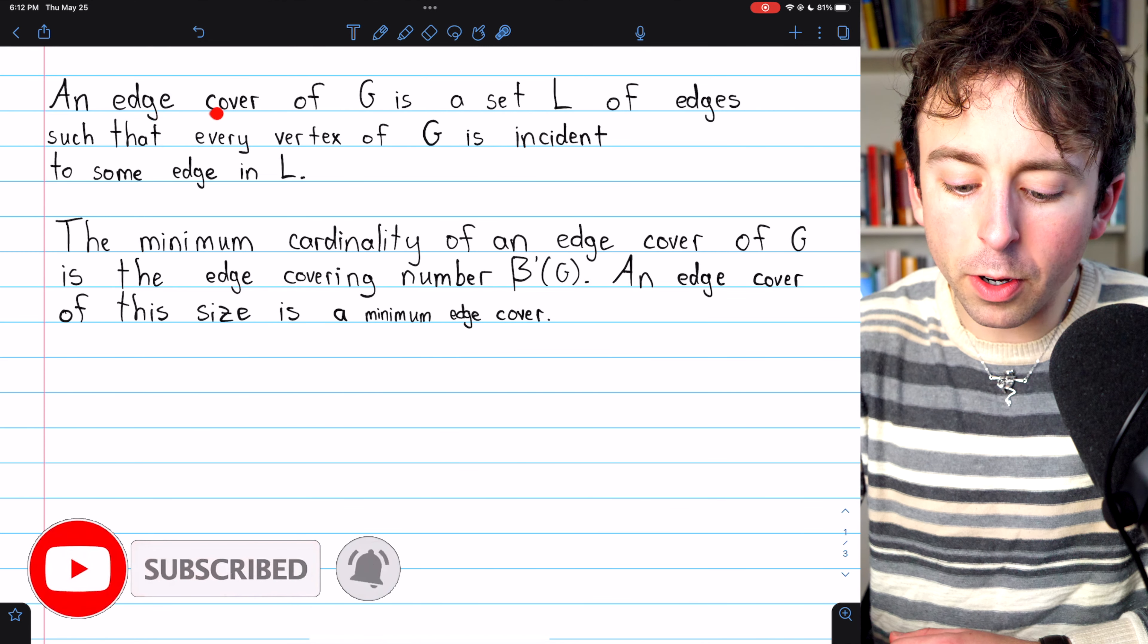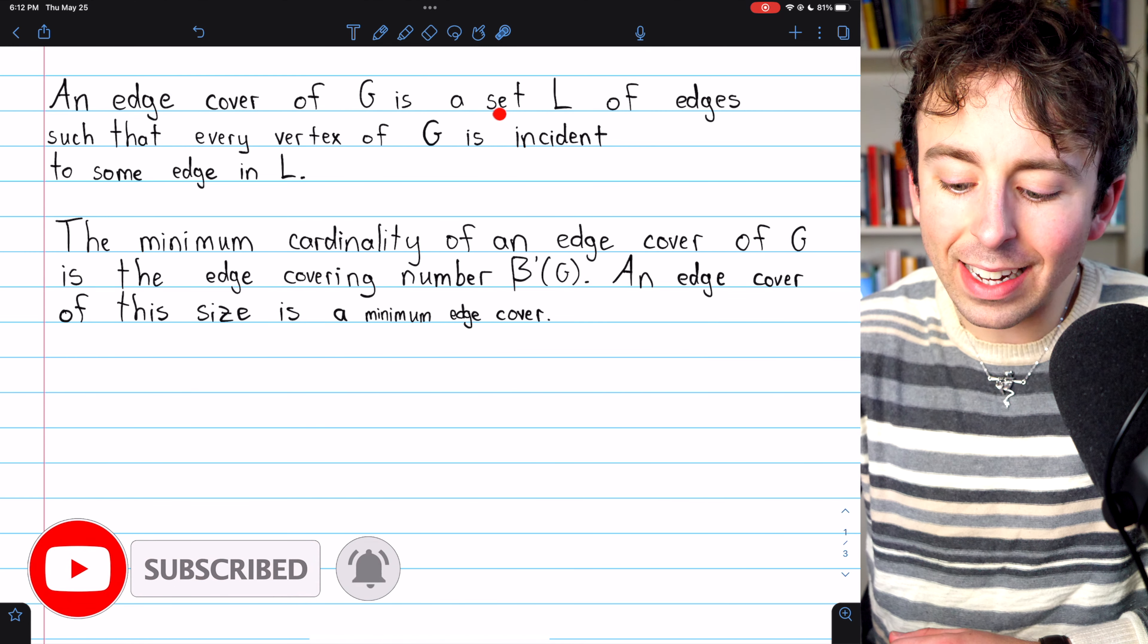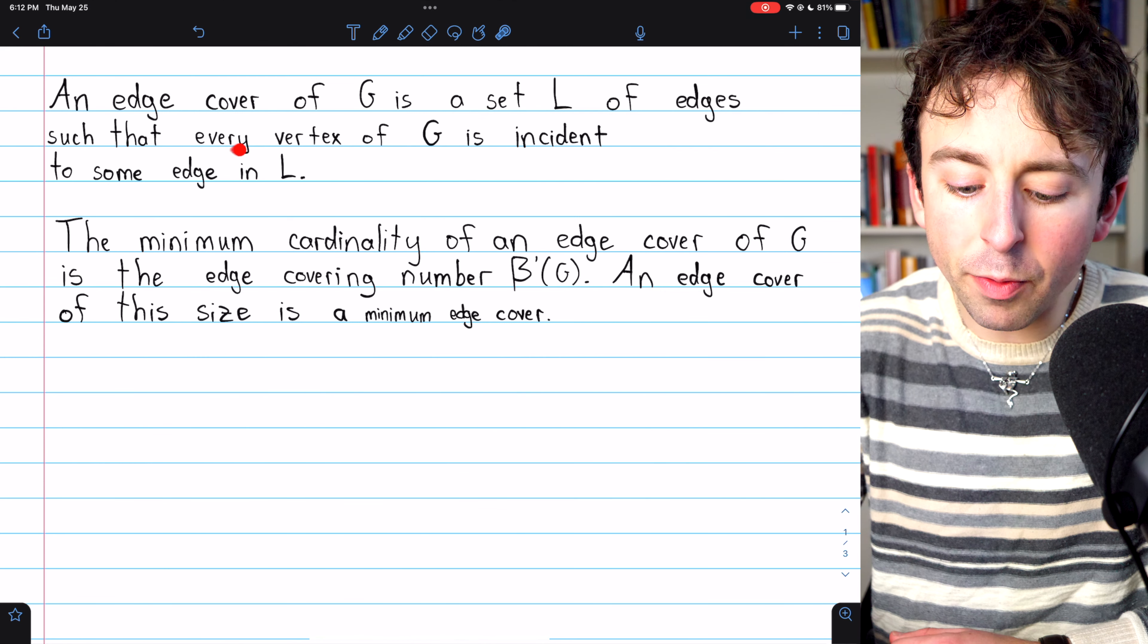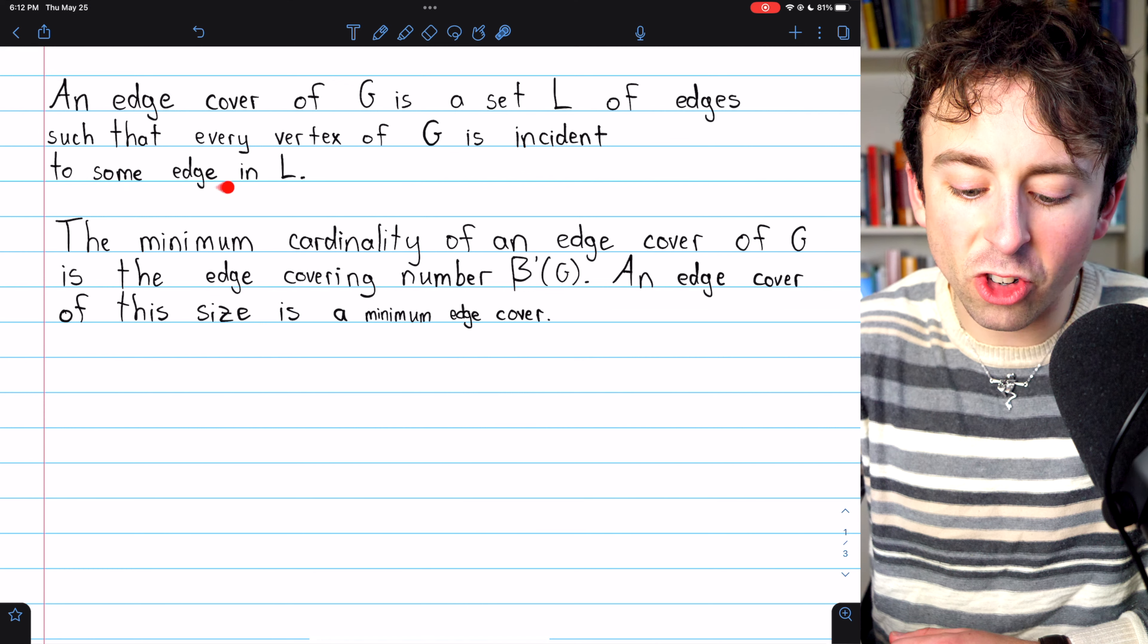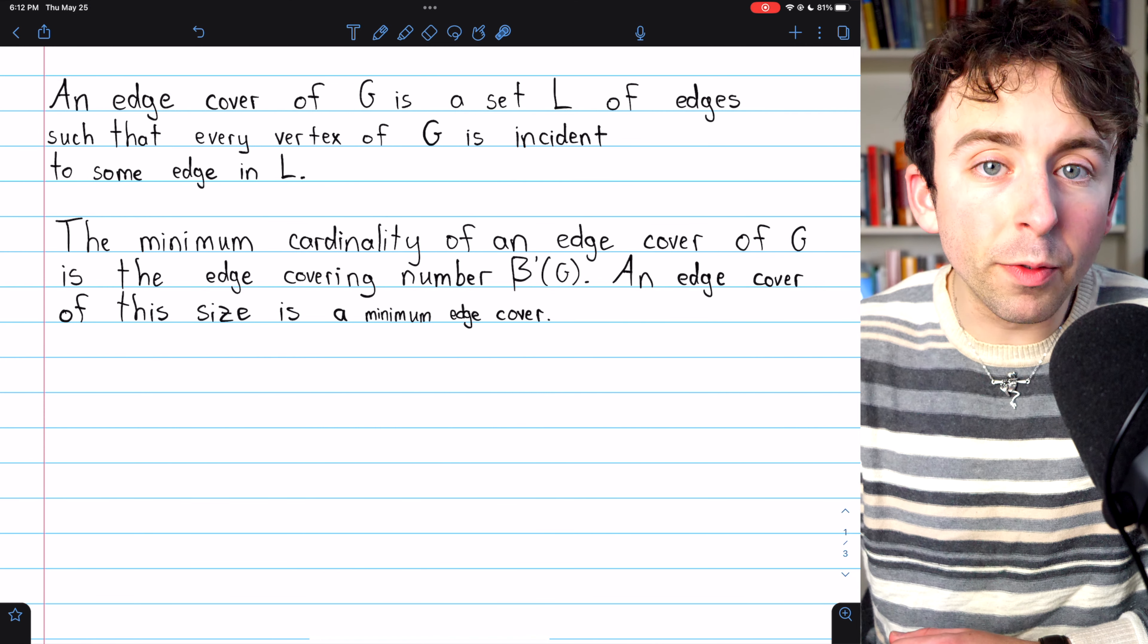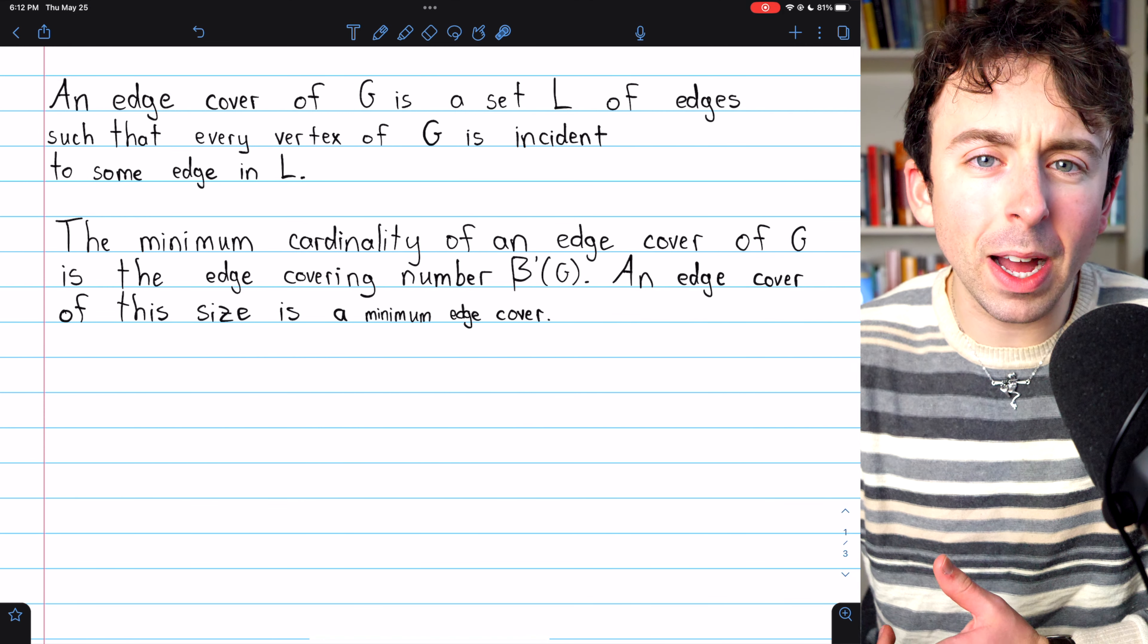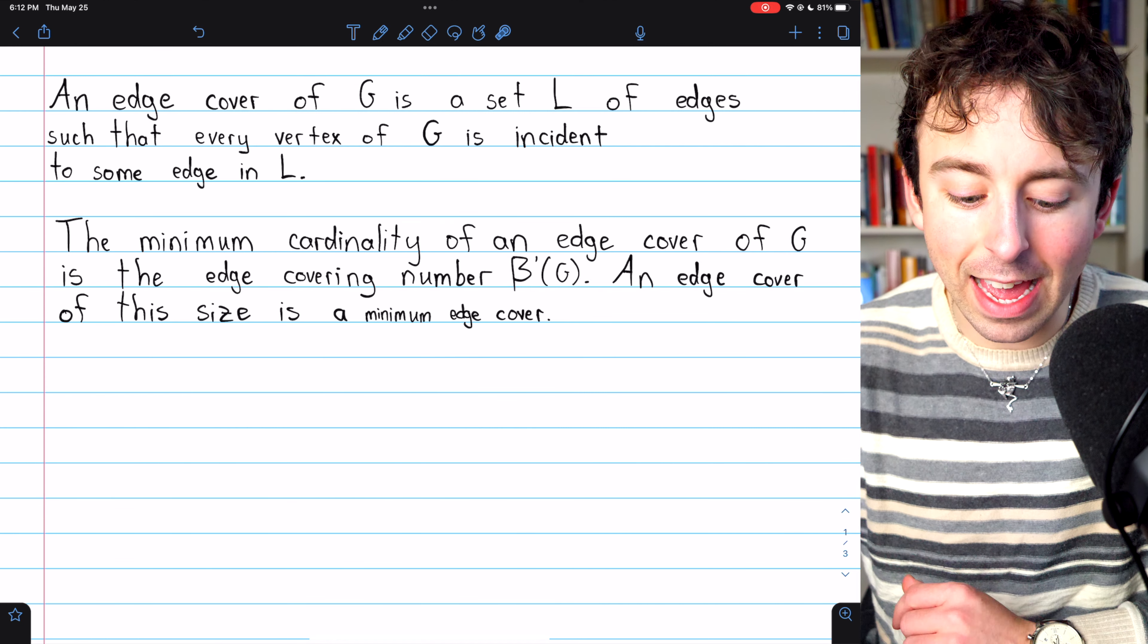An edge cover of a graph G is a set L of edges such that every vertex of G is incident to some edge in L. So every vertex of G is covered by some edge in the edge cover.